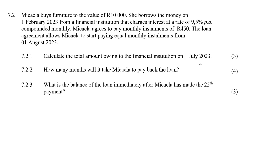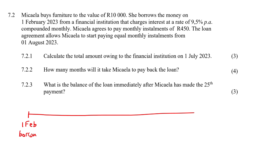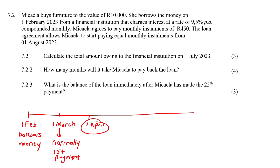Let's break this down. On 1 February, Makayla borrows money. Now normally, if you've watched all the videos on present value and future value, when do we normally make our first payments? Normally it's after one month. So usually we would make our first payment in March, then 1 April would be the next payment — so that would normally be the first and second payment.